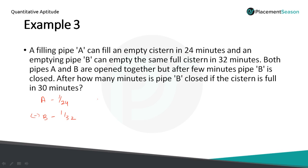Pipe A is operated for the entire 30 minutes, filling the tank. So 1 by 24 into 30 equals 30 by 24, which simplifies to 5 by 4. Total work equals 1, but here it is more than 1 — the extra 1 by 4 is the extra work done by A beyond filling the tank.